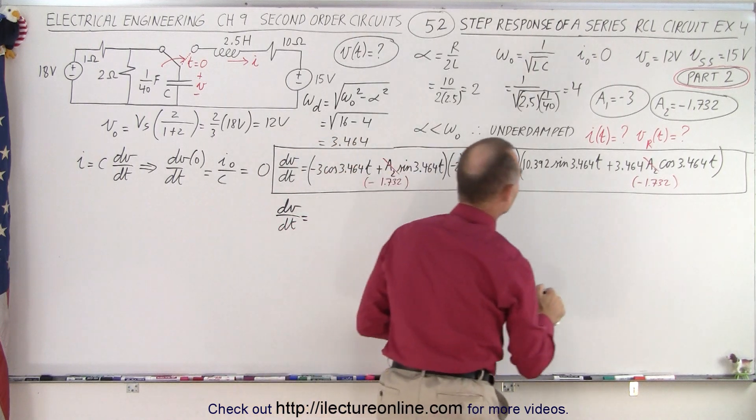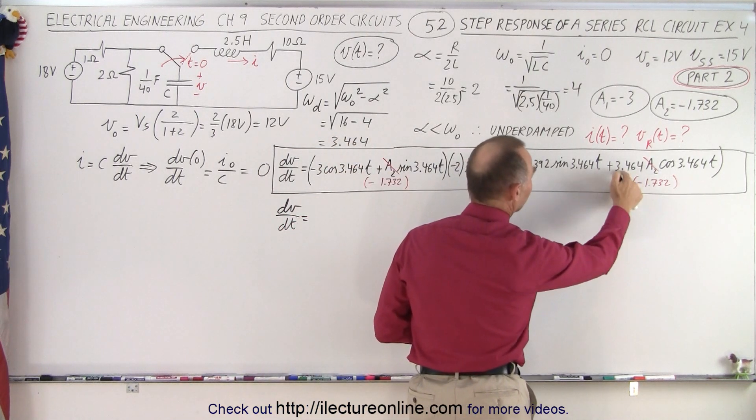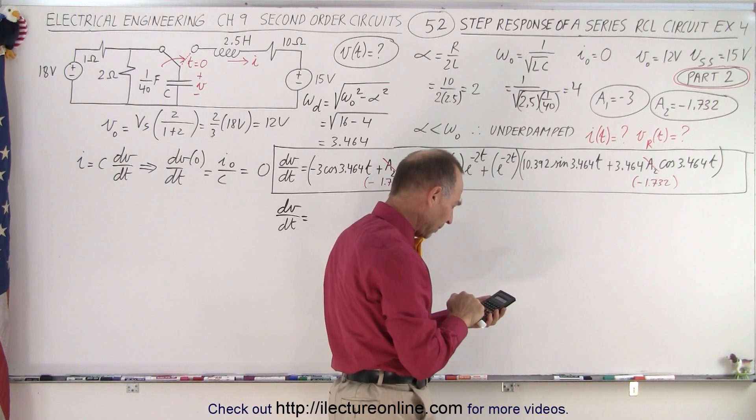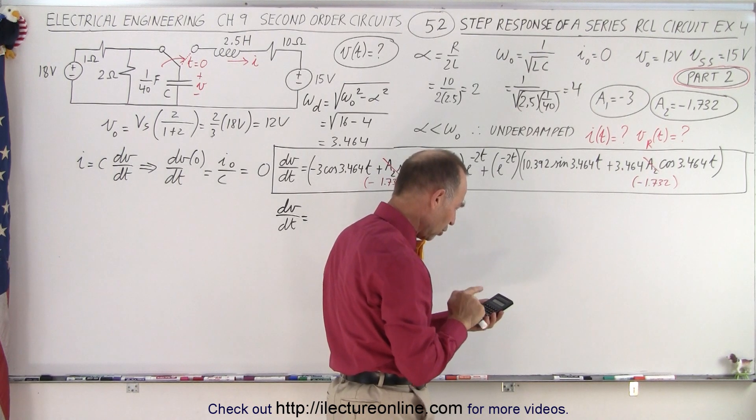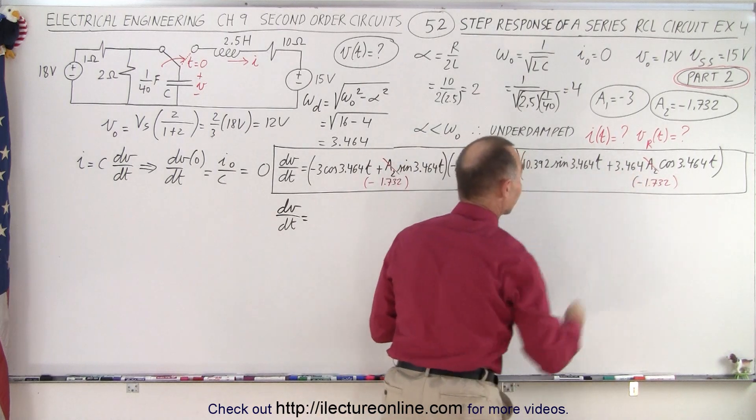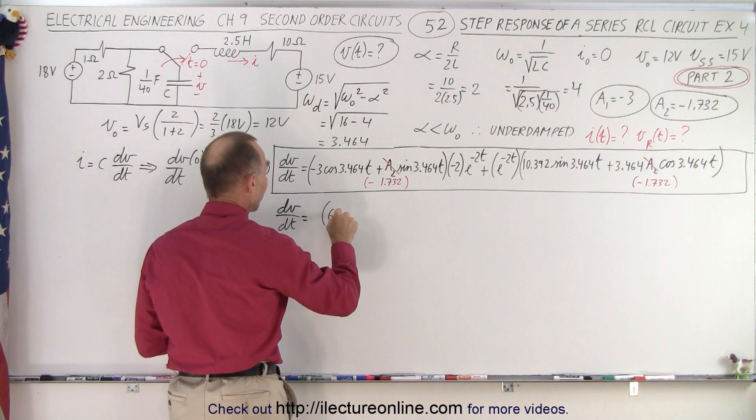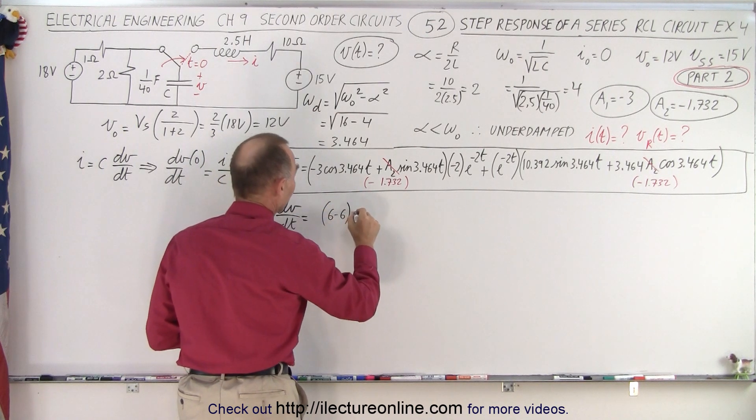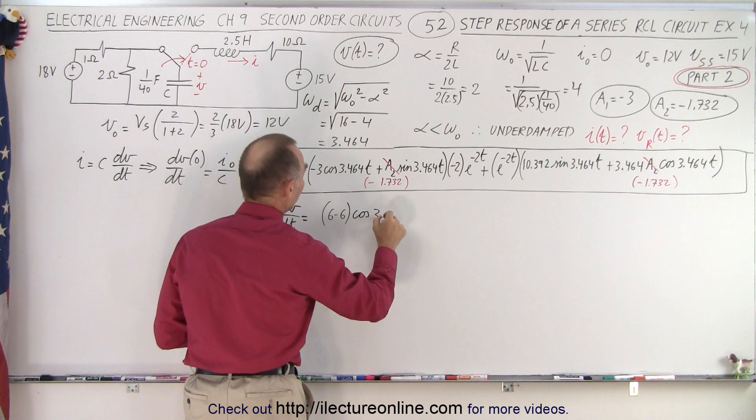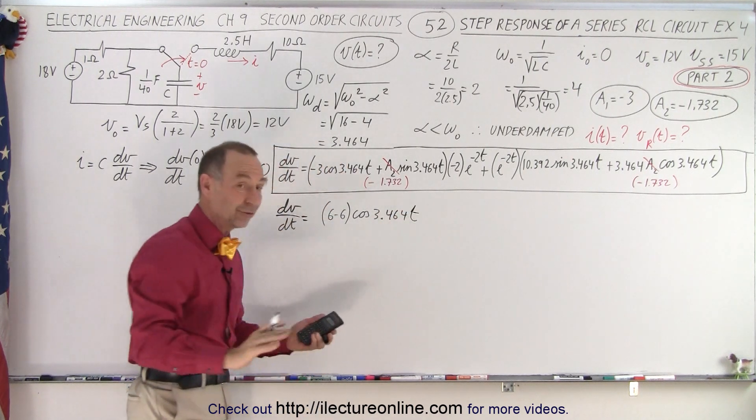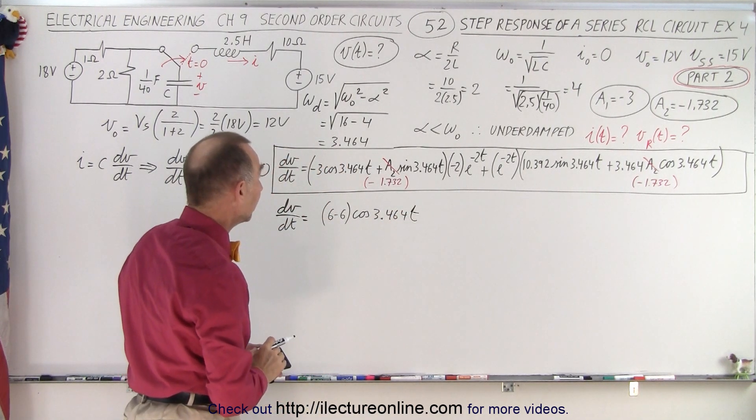we have to multiply these two together. We end up with 3.464 times 1.732, and notice that's also 6, but minus 6. So for the cosine term, we get 6 minus 6 times the cosine of 3.464t, which means the cosine term simply drops off.